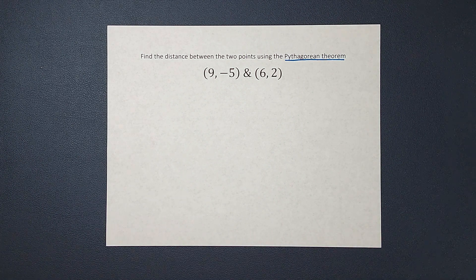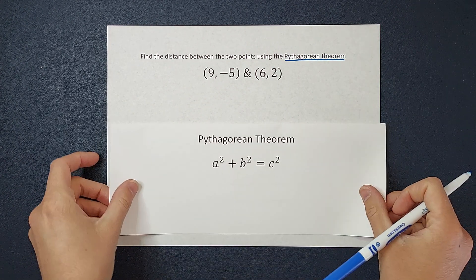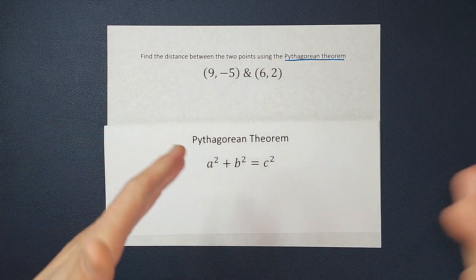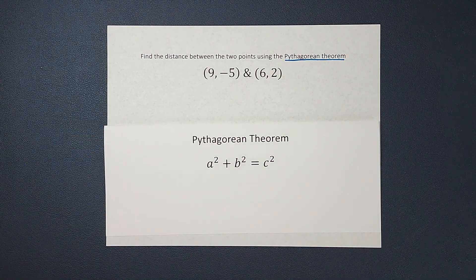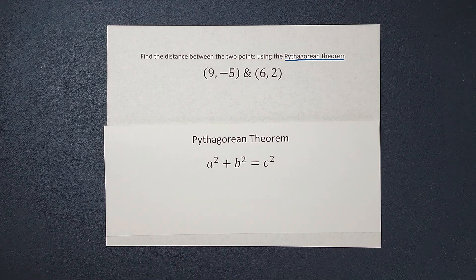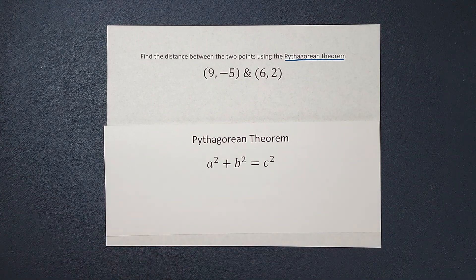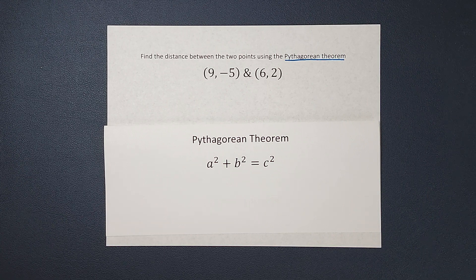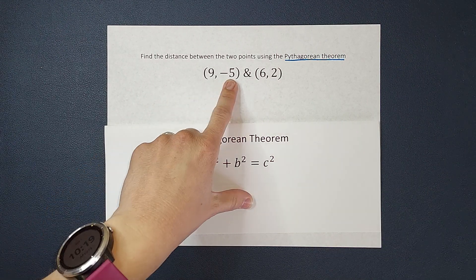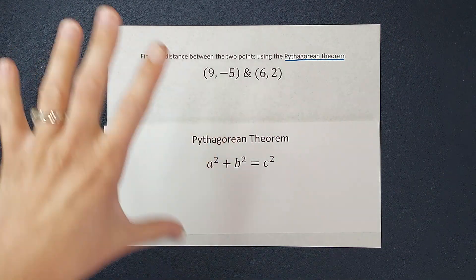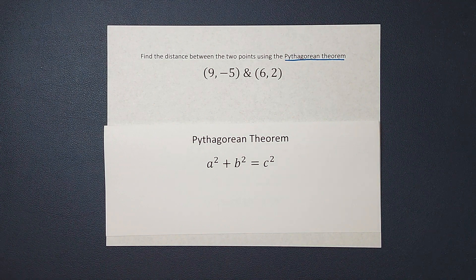The Pythagorean Theorem — you're probably familiar with it — is a squared plus b squared equals c squared. When you hear Pythagorean Theorem, you probably think right triangles. So how is a theorem about right triangles supposed to help me find the distance between two points?